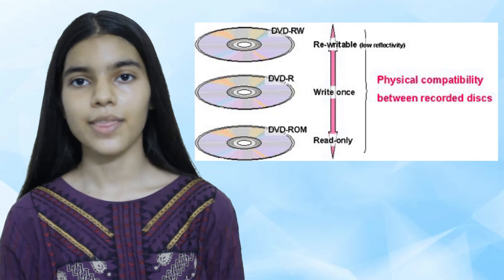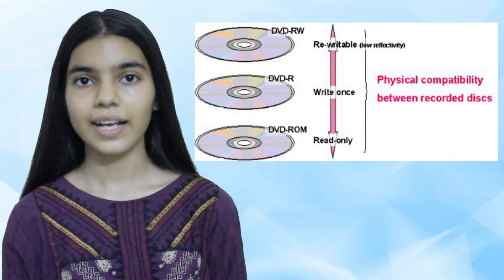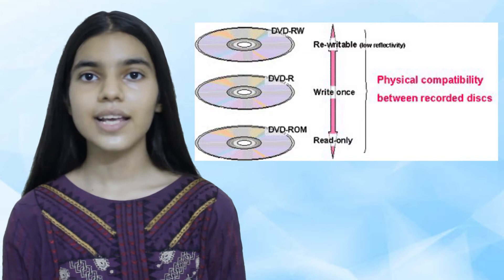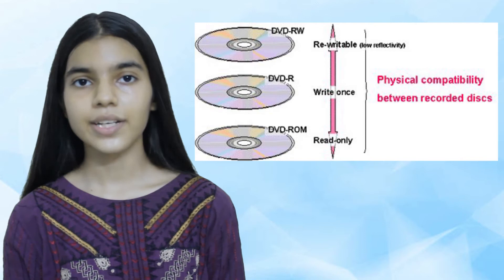Read-only media have data pre-written on them and the data cannot be overwritten. Music, film, software, and games are often distributed this way. Recordable (R) media are blank; an optical device writes data to them by shining a laser onto the disk, burning pits to represent zeros. The media can be written to only once, but can be read many times. Re-writable (RW) media work in a similar way to R-media, but can be written more than once.